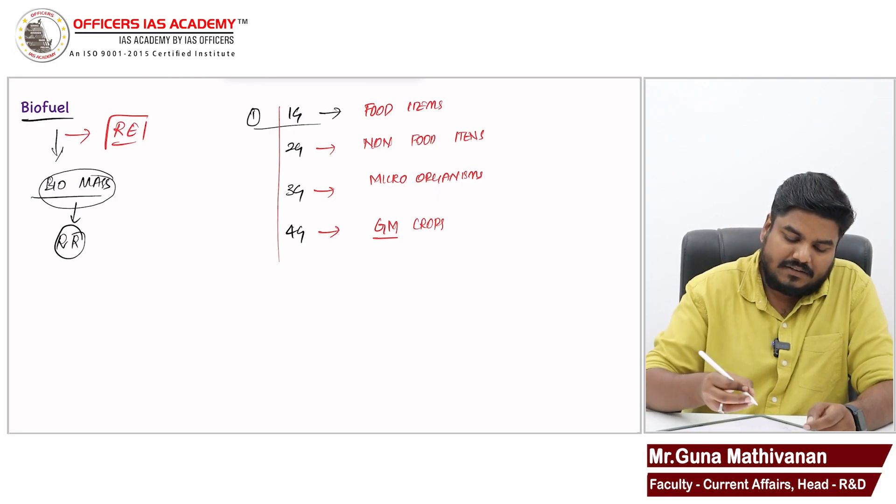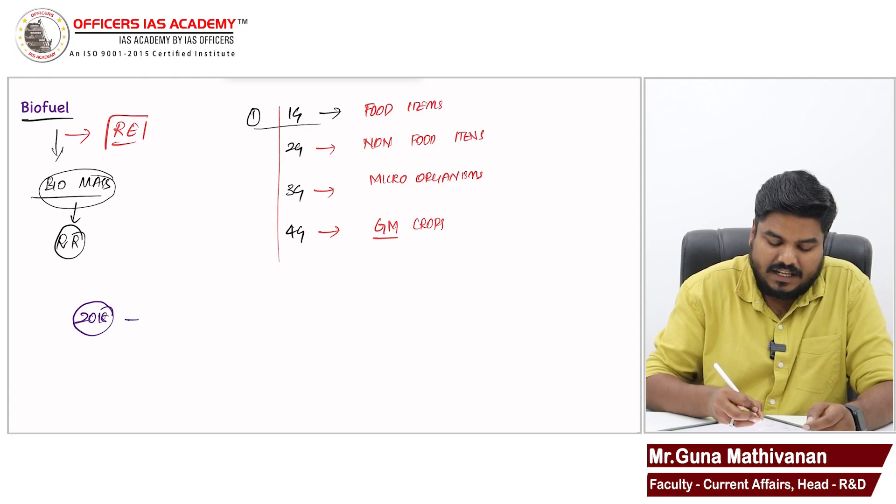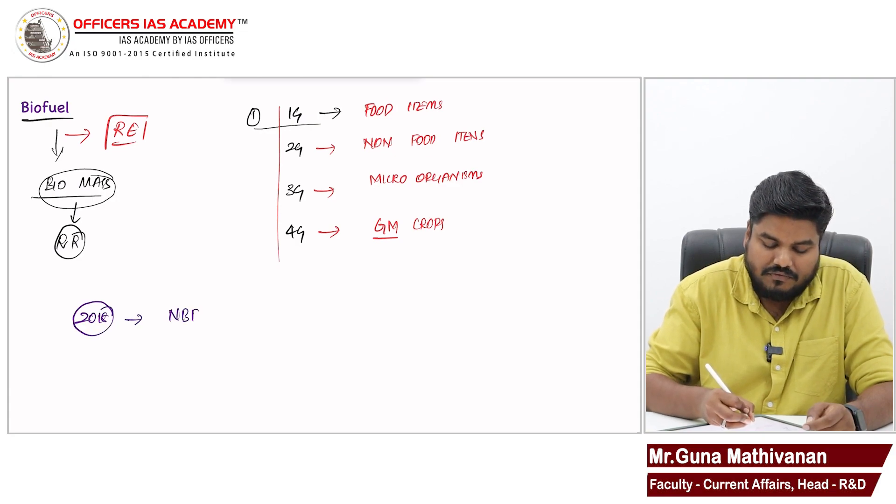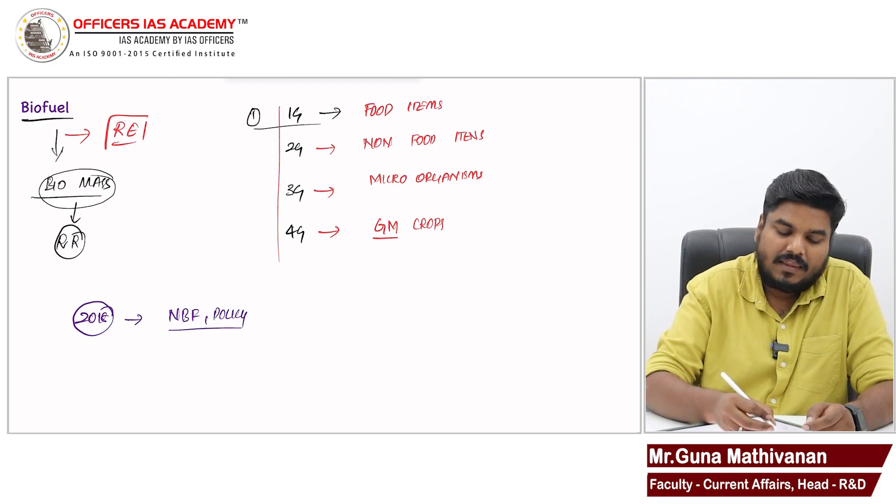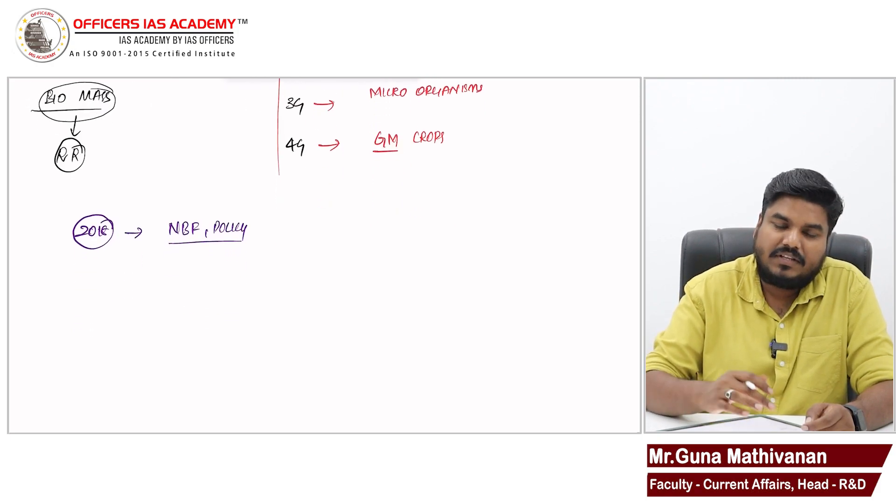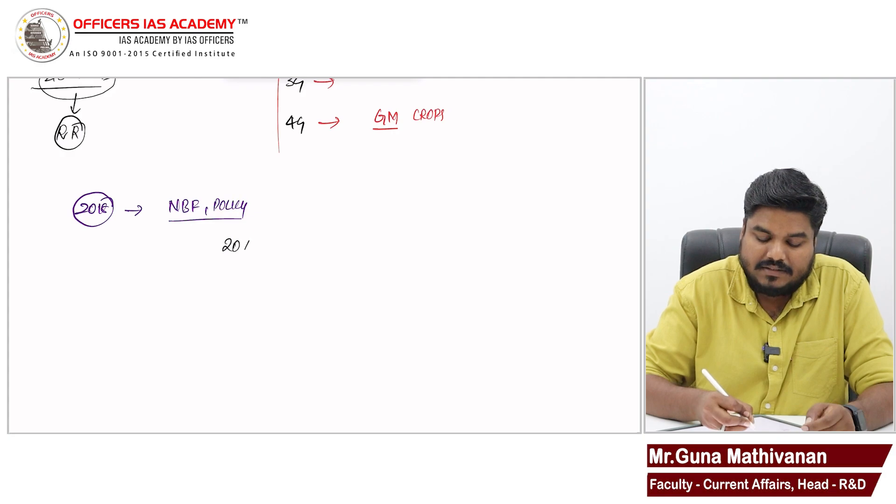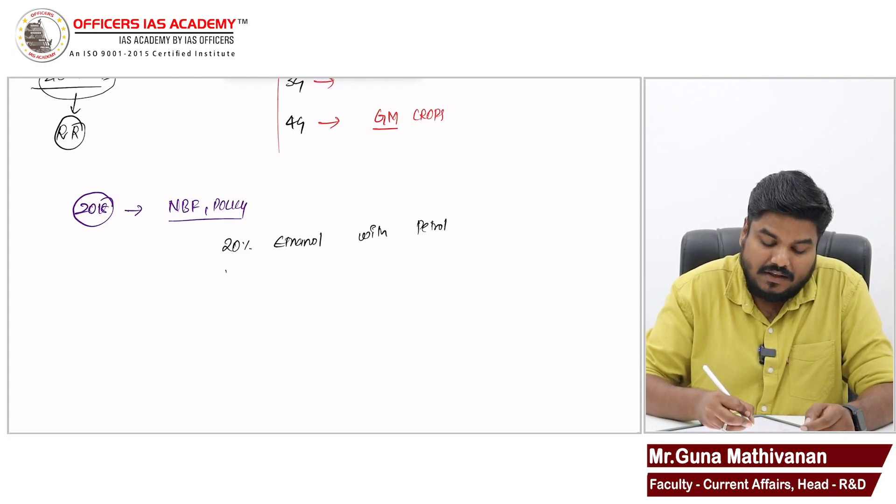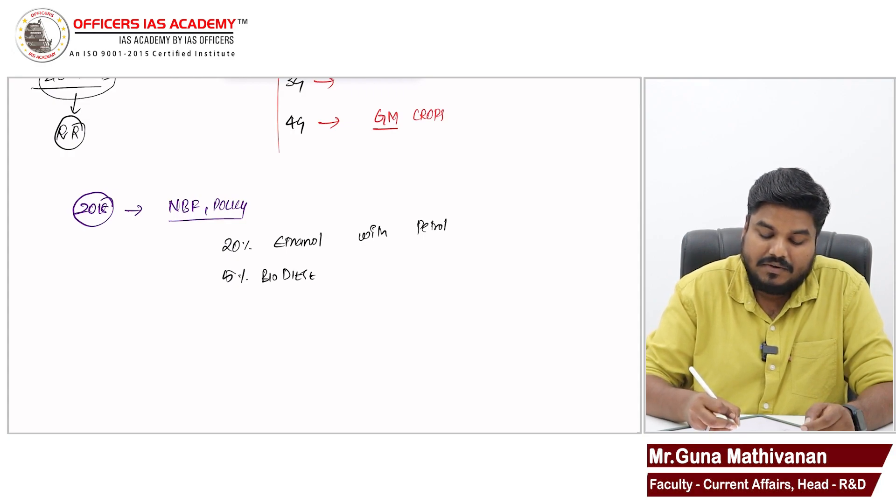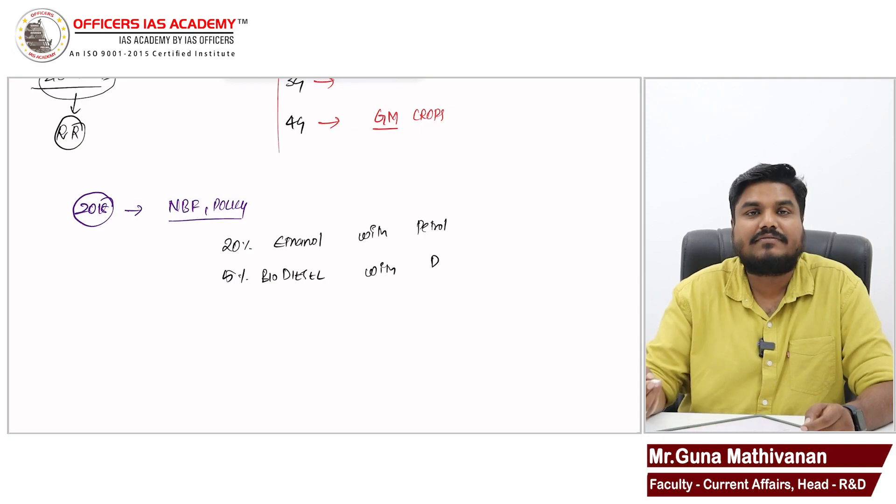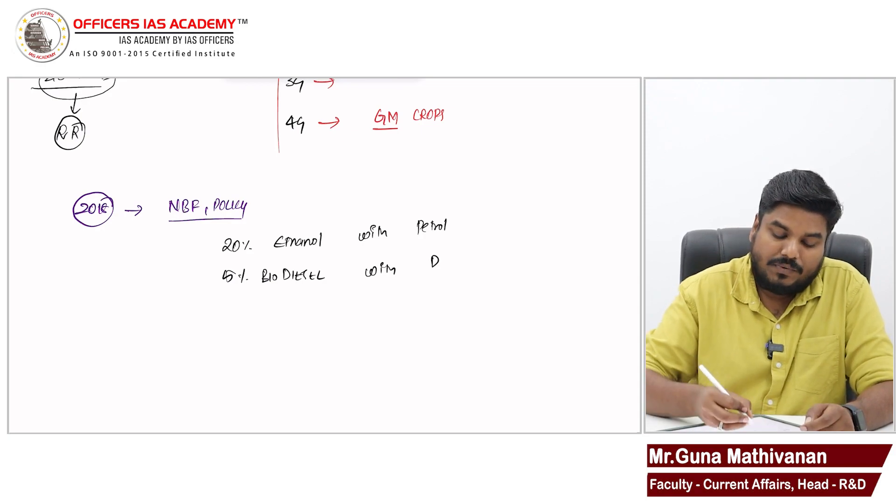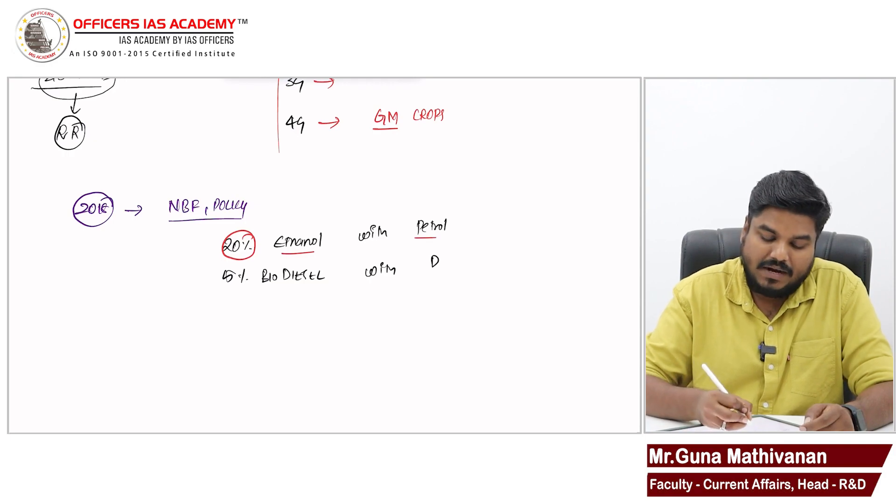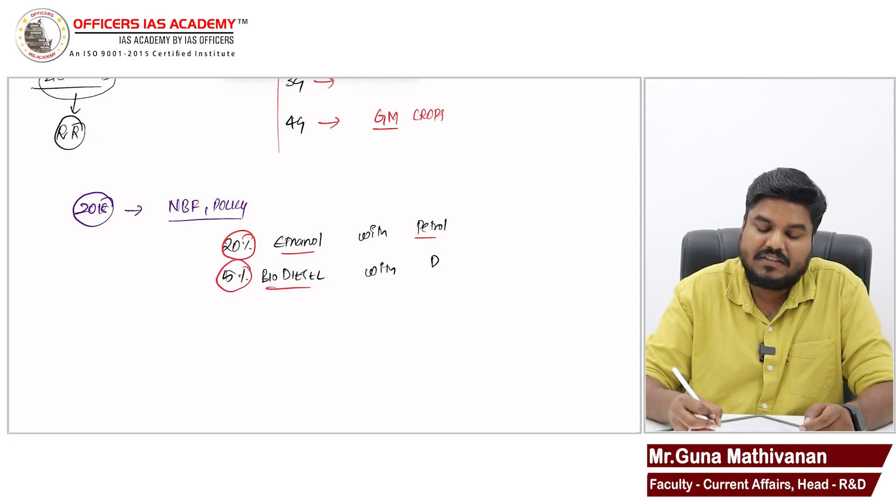In 2018, government came with national biofuel policy. The main objective of this policy is to blend 20% of ethanol with petrol and to blend 5% of biodiesel with diesel.